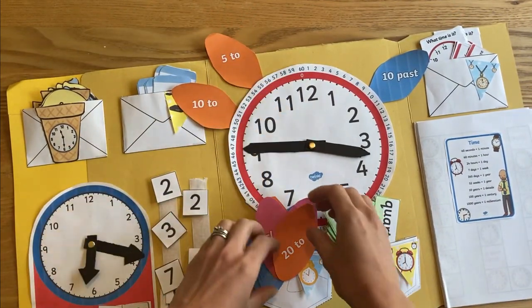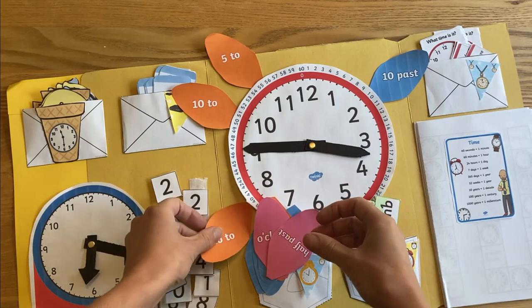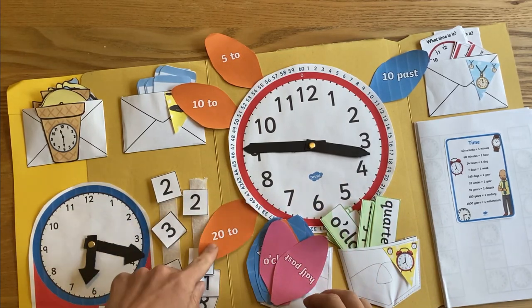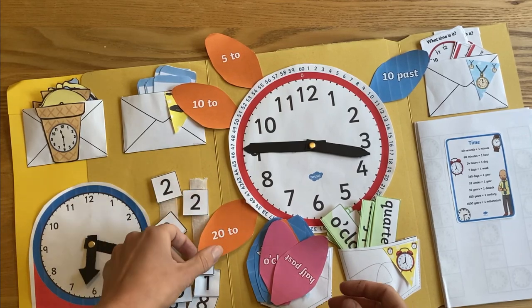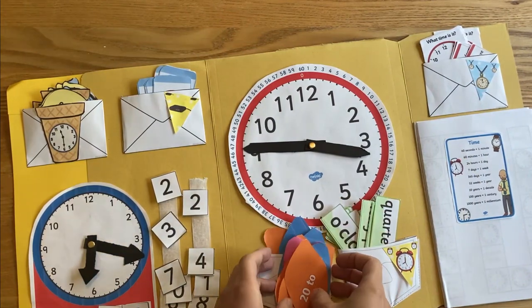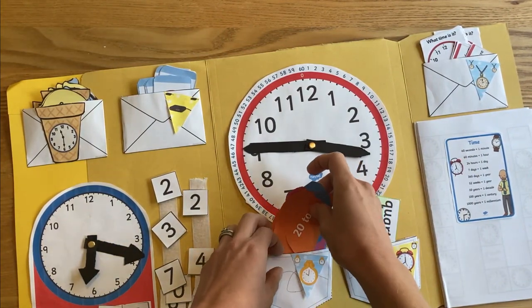We can go through what all the times mean. We've got 40 minutes there, and that again can help with analog and digital too. When they want to finish that activity, you can just clip it nicely in there.